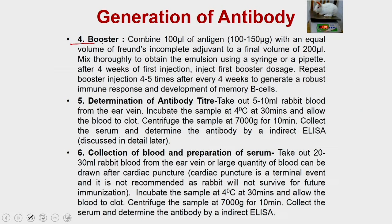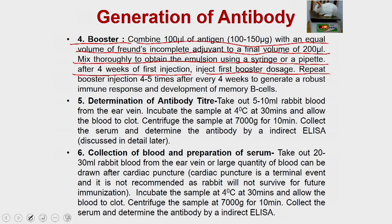Once you are done with the primary injection, you carry out booster injections. Combine 100 µL of antigen (100–150 µg) with an equal volume of Freund's incomplete adjuvant to a final volume of 200 µL; mix thoroughly to obtain an emulsion using a syringe or pipette. After four weeks of the primary injection, inject the first booster dose. Repeat the booster doses 4–5 times, which will cause a robust immune response and development of memory B cells.